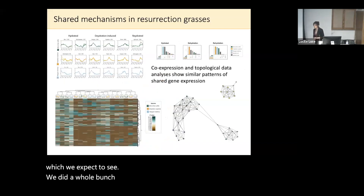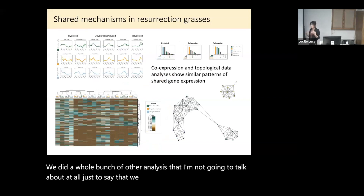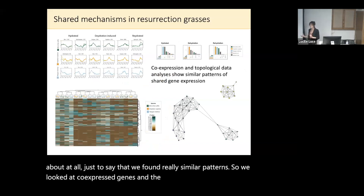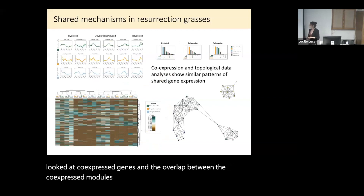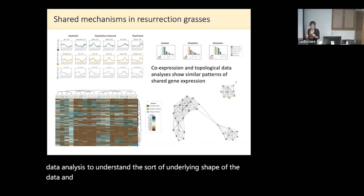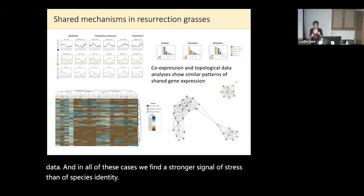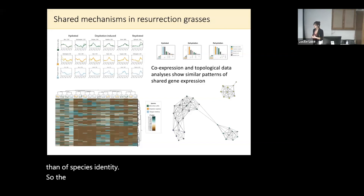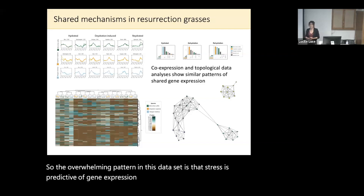We did a whole bunch of other analyses — looking at co-expressed genes and the overlap between co-expressed modules, and conducting topological data analysis to understand the underlying shape of the data. In all of these cases, we find a stronger signal of stress than of species identity. The overwhelming pattern in this dataset is that stress is predictive of gene expression above and beyond species identity.